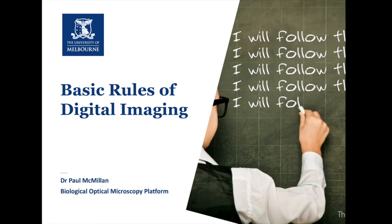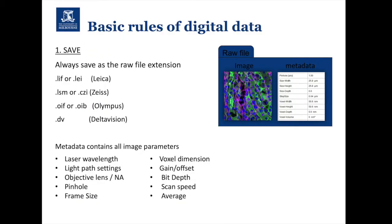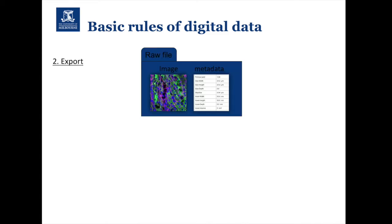Our basic rules of digital imaging: first, always save your data under the raw file extension. On a Leica system that would be .LIF or .LEI; on Zeiss it's .CZI, and so on. The reason is that this saves not just the image but also what we call metadata — information about exactly what the microscope settings were when you took that experiment. A lot of software also allows you to reuse those settings on another day, so you can be imaging in exactly the same way weeks or months apart.